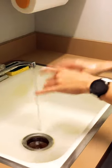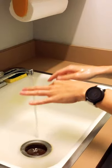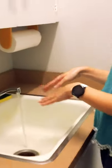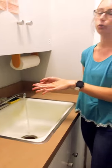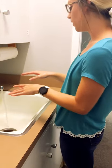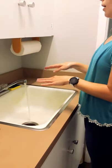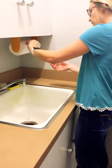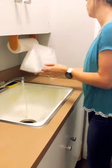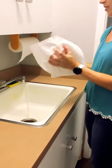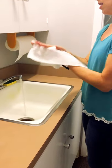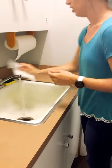For every three times that we use hand sanitizer, you should wash your hands at least once to prevent residue buildup. Once you are finished, you can dry your hands with a single-use towel and dry them thoroughly, and then from there you can turn off the faucet and throw away your towel.